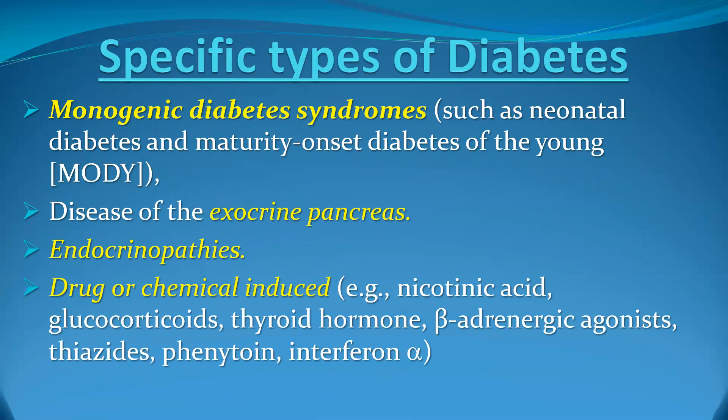Specific types of diabetes — sometimes called secondary diabetes — include disorders of the exocrine pancreas, chronic pancreatitis, acromegaly, Cushing's syndrome, and diabetes secondary to drugs like steroids.